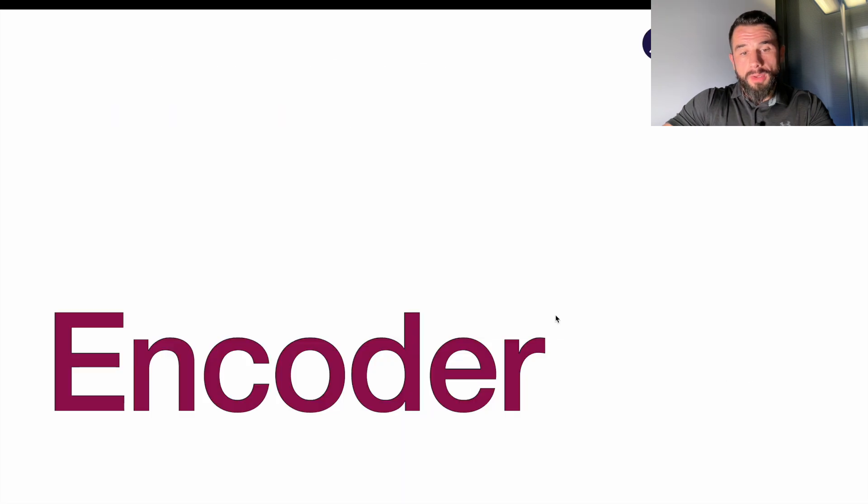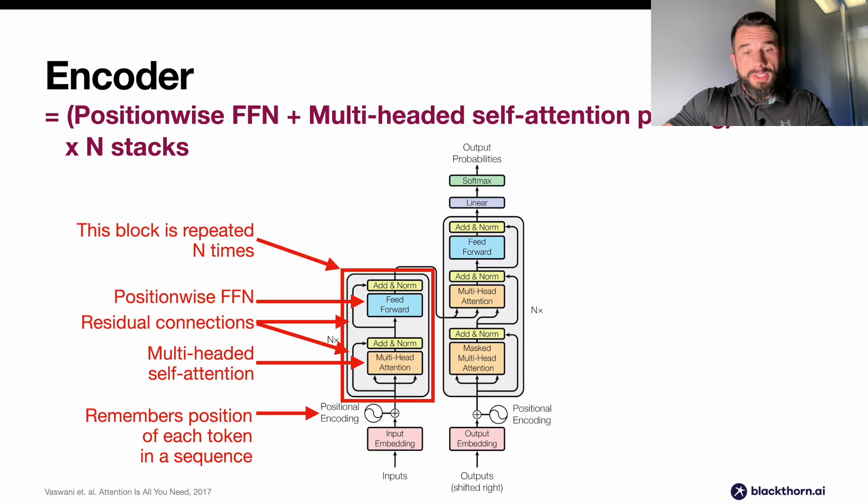Let's talk about the encoder and its components in more detail now. As you see, the encoder consists of position-wise feed-forward network, residual connections, multi-headed self-attention, and positional encoding that remembers the position of each token in a sequence for each vocabulary token. We will revisit each of these components and review them using the source code for complete implementation clarity.